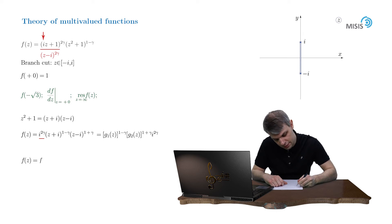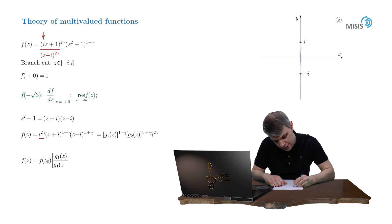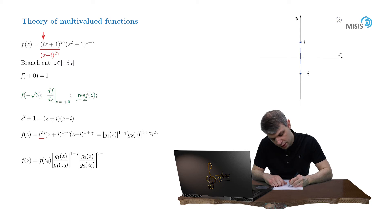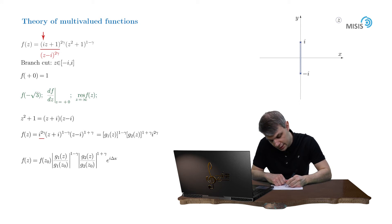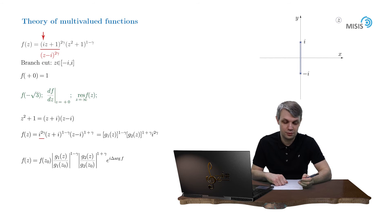Using the same reasoning as before, we write down a general formula for the regular branch of this multi-valued function. f of z equals f of z-naught, where z-naught is our reference point, times the modulus of the ratio g1(z) over g1(z-naught) to the power of 1 minus gamma, times the modulus of the ratio g2(z) over g2(z-naught) to the power of 1 plus gamma, times the exponential of the corresponding change of argument, i times delta argument of f. Note that I didn't write the i to the power of 2 gamma factor — it cancels out here.